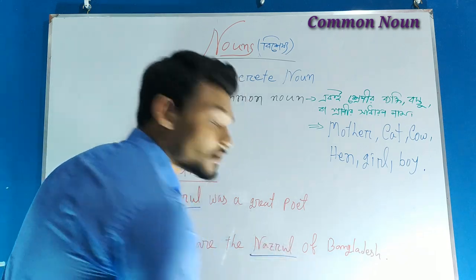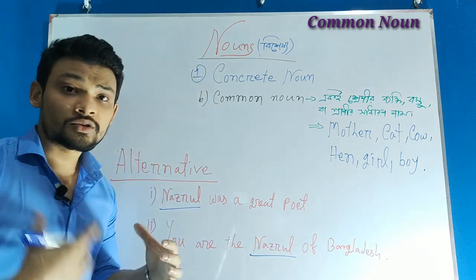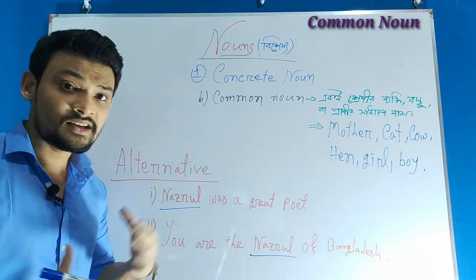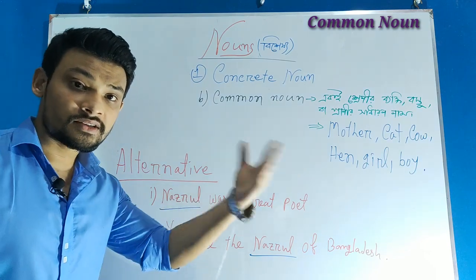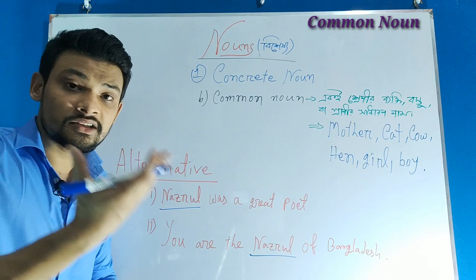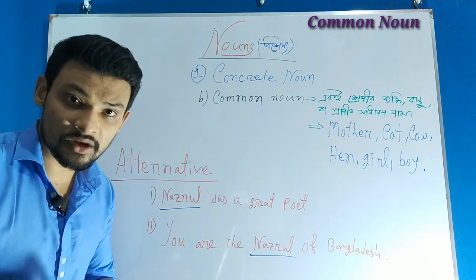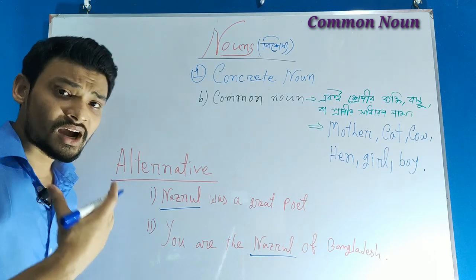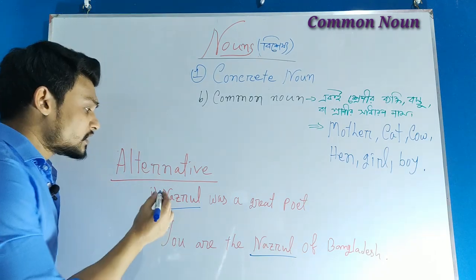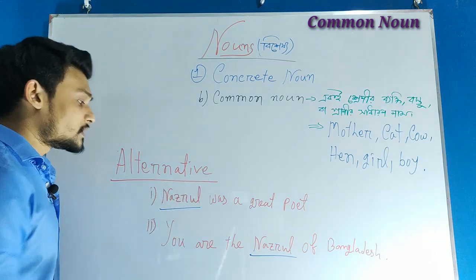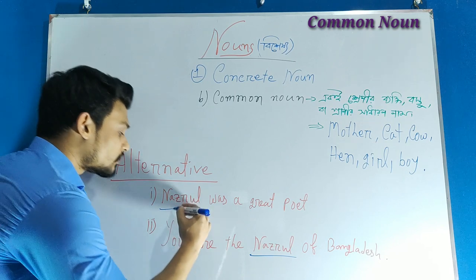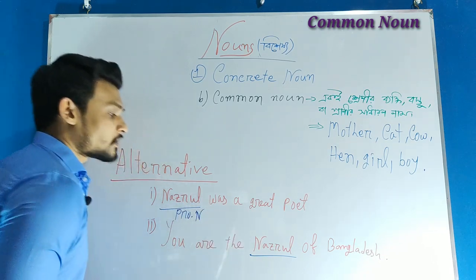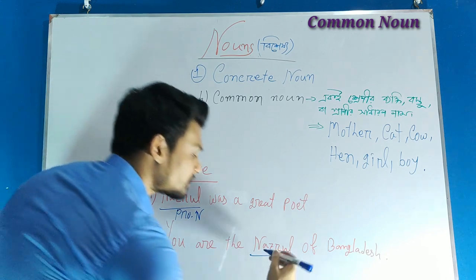When it is 'the nozzle of Bangladesh,' that is specific — a definite, particular name. That is a proper noun. The previous name 'nozzle' used generally is a common noun, whereas 'the nozzle of Bangladesh' is specific — that makes it a proper noun.